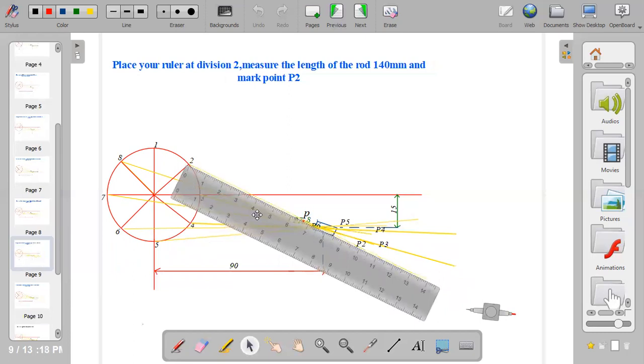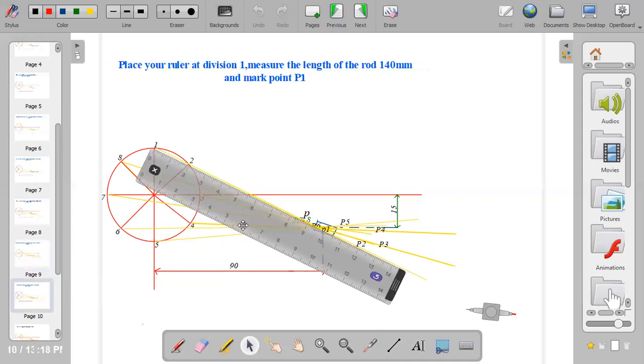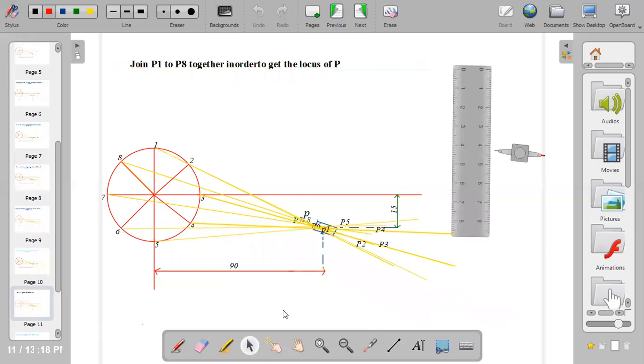From there we move on to division 2. All the points must slide through, they must go through the pivot at C. At division 2, place your ruler and measure 140mm, then at 100 you mark it and put P2. We move on to division 1. Place your ruler at division 1, let it pass through the same pivot, and at 100 you put P1.